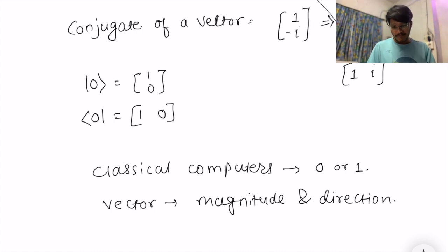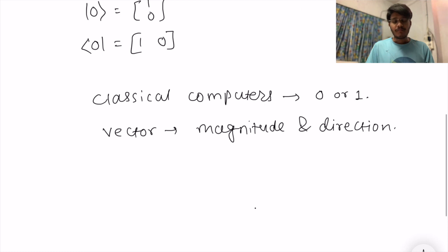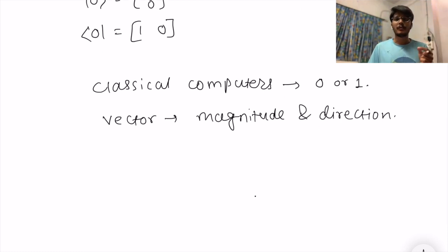And that's why we use those vectors to represent any particular state in quantum computers, that is a qubit state. Now with this we need to jump into computational basis.